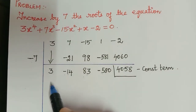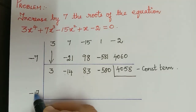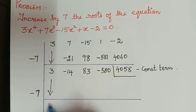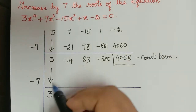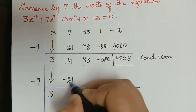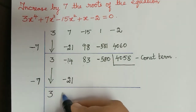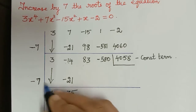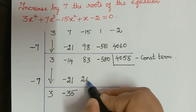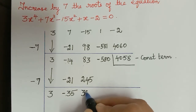After this, again we have to diminish these values by negative 7. So we write negative 7 here. This 3 comes down as such, then 3 multiplied with negative 7 is negative 21. Both are negative so we add, giving negative 35. Then negative into negative becomes positive, and 7 multiplied with 35 gives 245. Both are positive so we add to obtain 328.